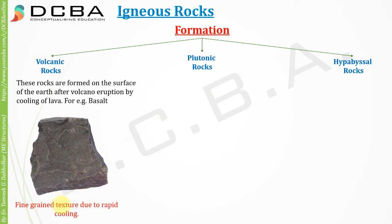This fine-grained texture is attributed to rapid cooling. When the lava comes outside, it cools rapidly because it is exposed to the outer atmosphere. By contrast, inside the earth the temperature is higher, so the rock does not cool as easily.